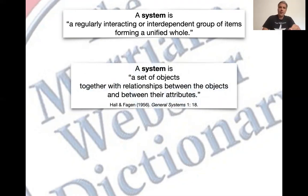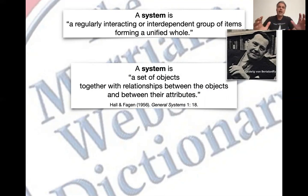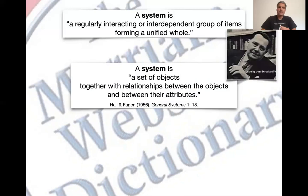This is from a paper by Hall and Fagan in 1956, channeling the views of Ludwig von Bertalanffy, the Viennese godfather of modern systems theory. And they say a system is a set of objects together with the relationships between the objects and between their attributes. So there are relationships and there are objects. This definition is a bit static for me — it's relational, it tries to relate different objects together, but it doesn't quite do it yet for me.